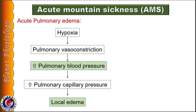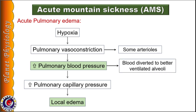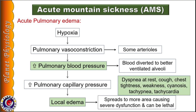Hypoxia causes pulmonary vasoconstriction in some local areas and increased pulmonary blood pressure, to divert blood to better ventilated alveoli. Increased pulmonary blood pressure increases pulmonary capillary pressure, and fluid leaks into interstitial spaces, leading to development of localized pulmonary edema. Eventually, edema spreads to more areas of the lungs, leading to severe pulmonary dysfunction which can be lethal.